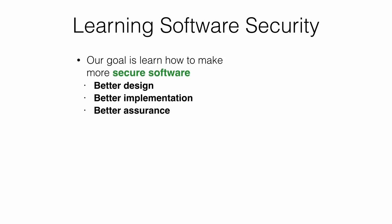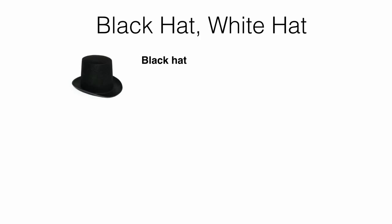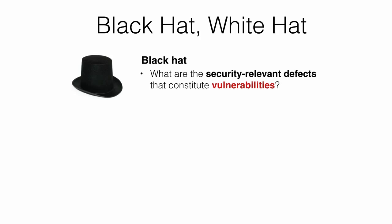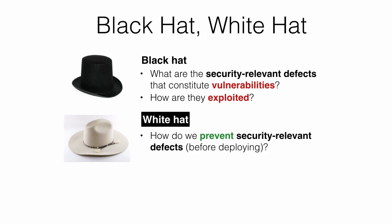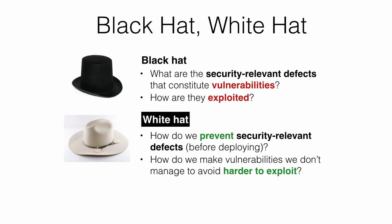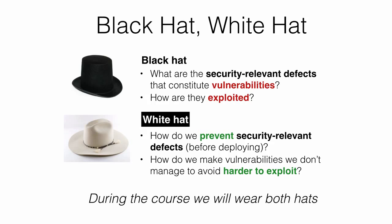The goal of this class is to learn how to make software more secure — better designs, better implementations, and better assurance that the software is resilient to attack. The course will take two points of view: black hat (the adversary) and white hat (the defender). The black hat asks what security-relevant defects constitute vulnerabilities and how they can be exploited. The white hat asks how to prevent security-relevant defects before deployment and make unavoidable vulnerabilities harder to exploit.